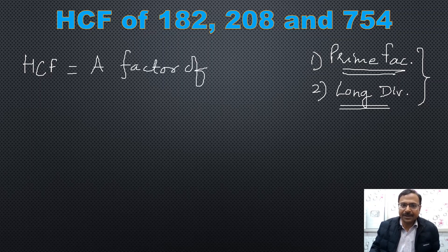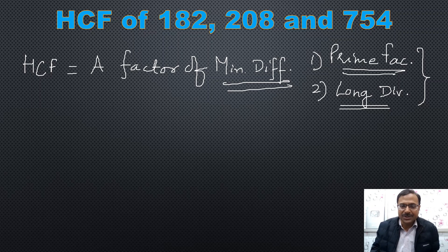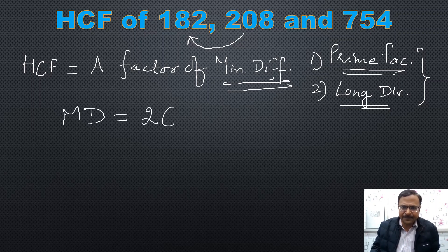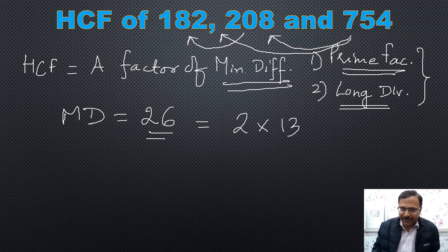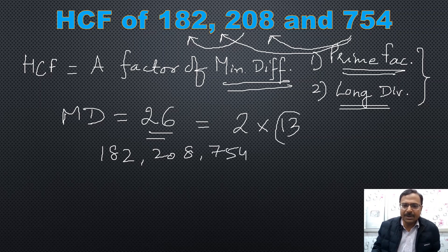For that, you need to understand that the HCF is actually a factor of the minimum difference between the given numbers. If you take the difference between 208 and 182, you get the minimum difference as 26. The difference between 754 and 208 is much higher, and 754 and 182 is even higher. So the minimum difference is 26, which splits into factors 2 × 13. Now, 182, 208, and 754 are all divisible by 13.